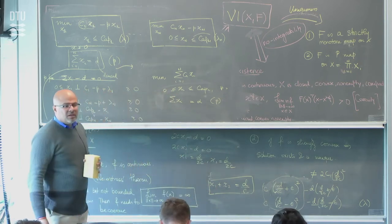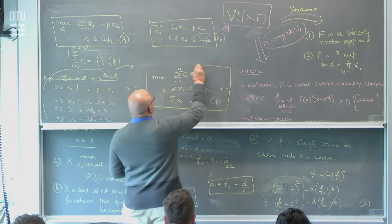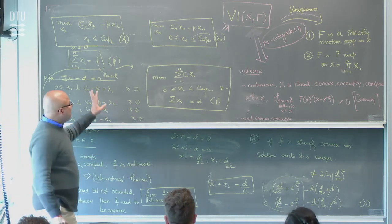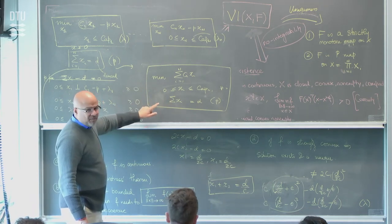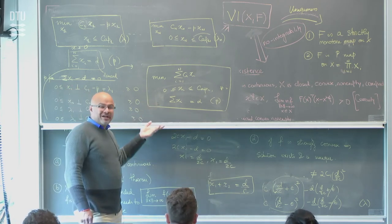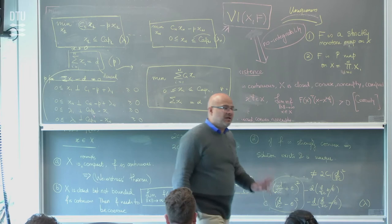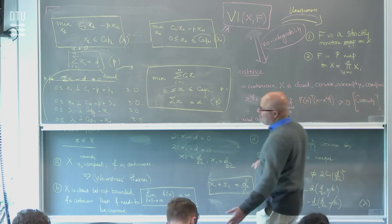This is called a perfectly competitive problem. For this class of problems, the analysis reduces to just understanding the properties of this single optimization problem—and this is a linear program. So if you want to show existence, existence follows immediately if the feasible region is non-empty. Uniqueness is harder because linear programs routinely have multiple solutions.